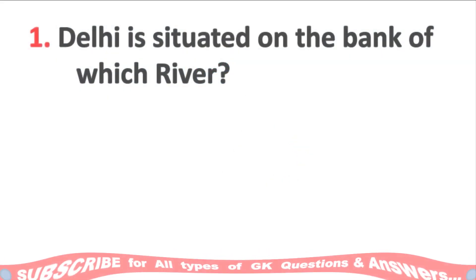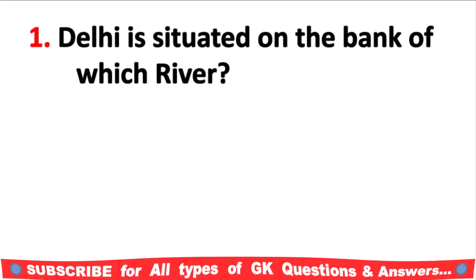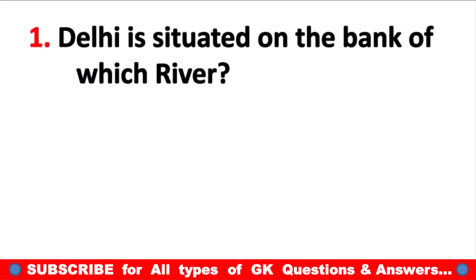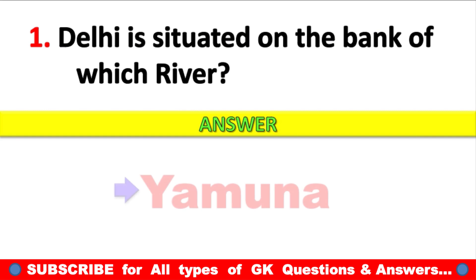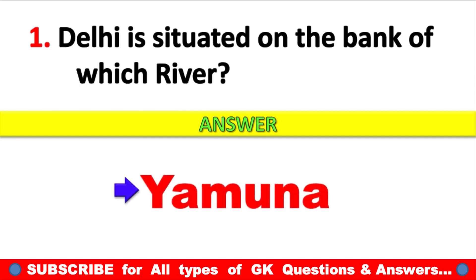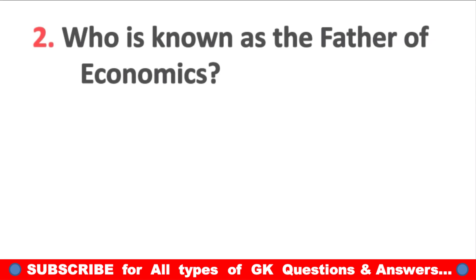Question 1: Delhi is situated on the bank of which river? Answer: Yamuna River.